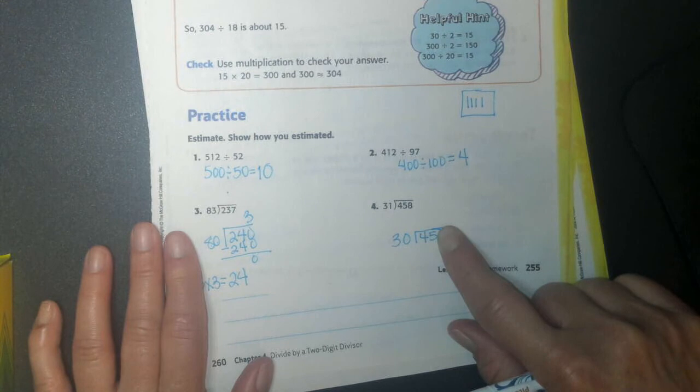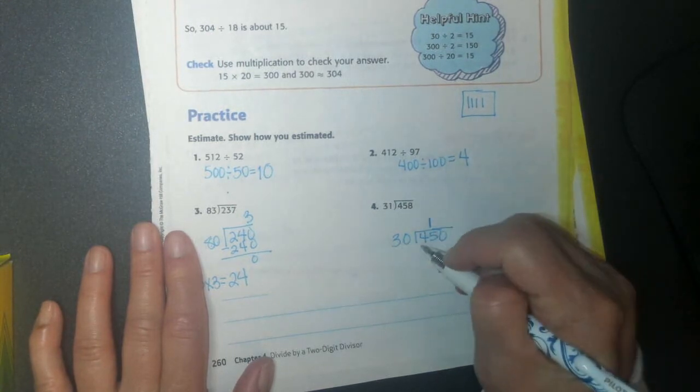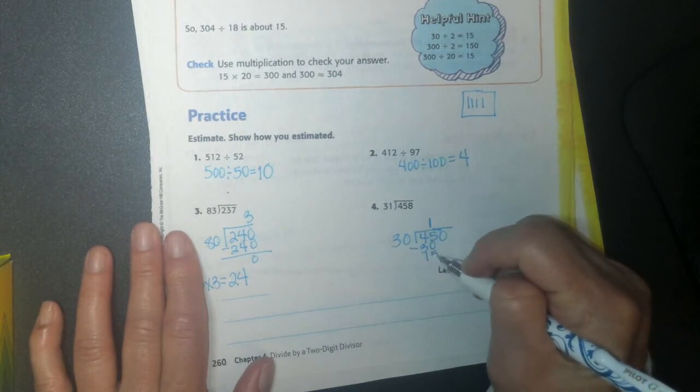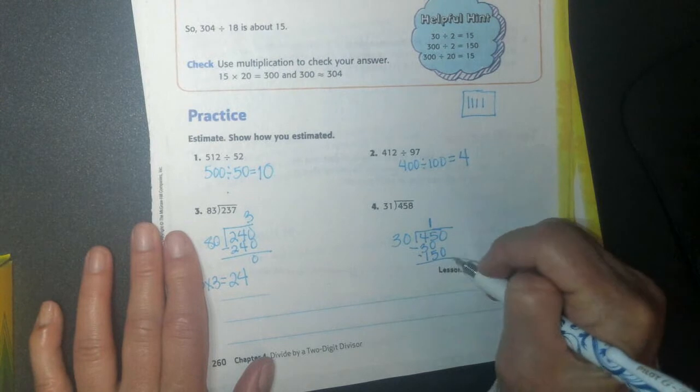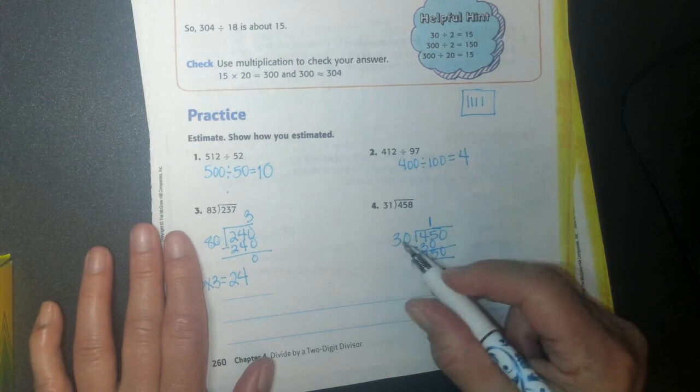So I'm going to say, can 30 go into 45? Yes, it can go in one time. So 1 times 30 is 30. I subtract. I have 15. I have 5, I bring down my 1, and I bring down my 0.